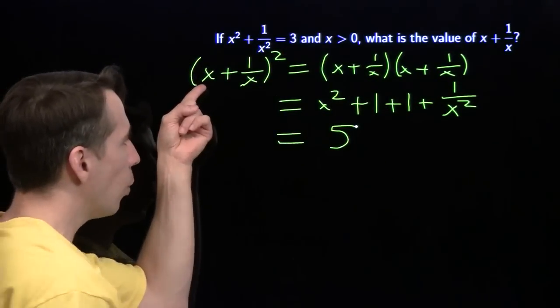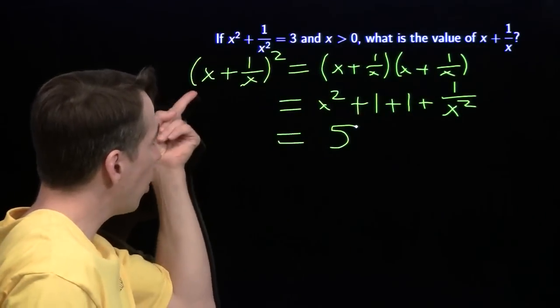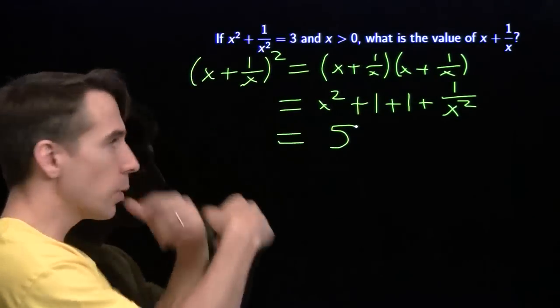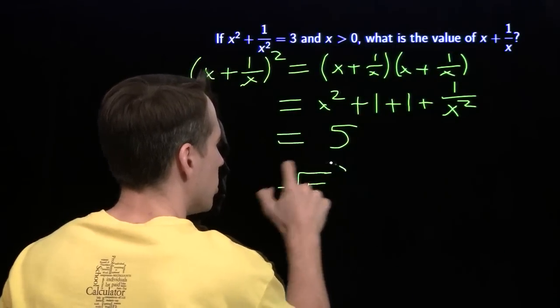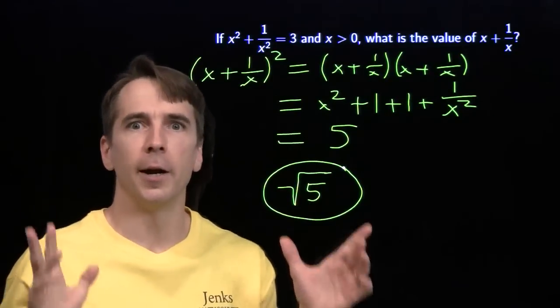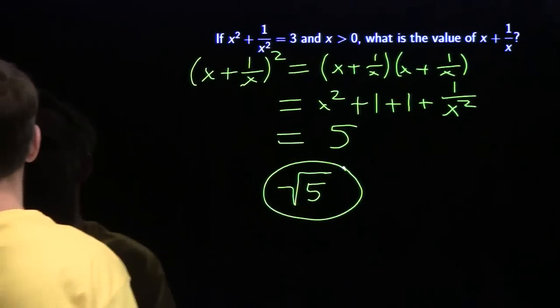So the square of what we want is 5. X is positive, so what we want is positive, so we take the square root, and what we want is the square root of 5. Don't just stare. Do something. On to the next problem.